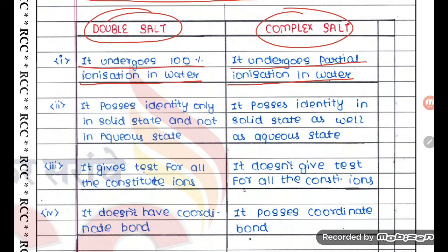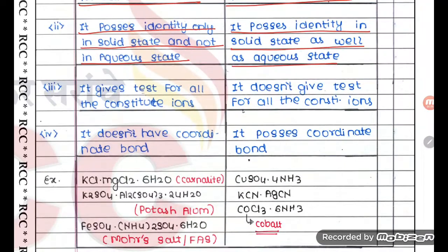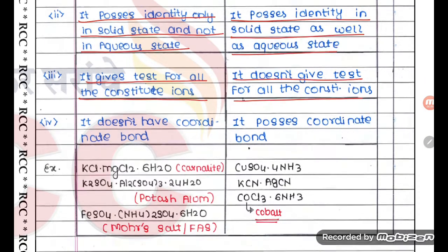Complex salt does not undergo complete ionization. It possesses identity only in solid state and not in aqueous state. Double salt, on the other hand, retains its identity in both solid state and aqueous state. Double salt gives a test for all its constituent ions, whereas complex salt does not give a test for all the constituent ions.